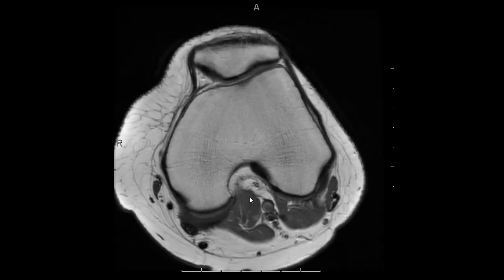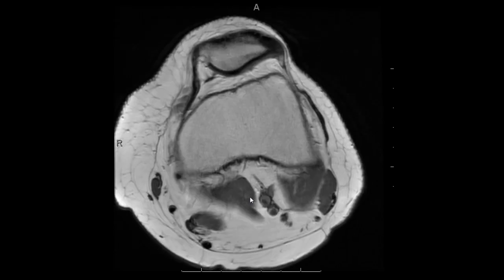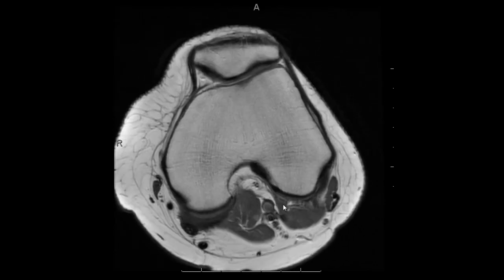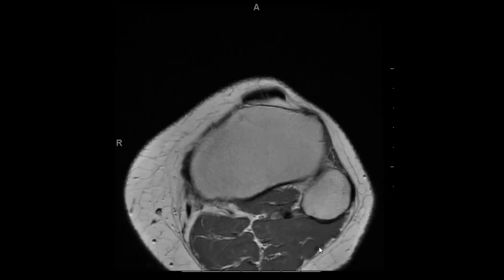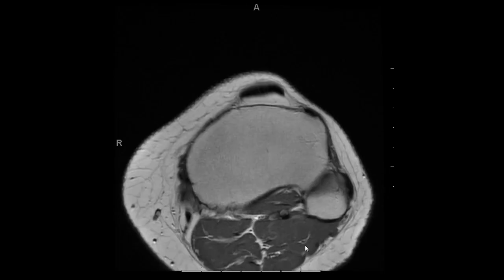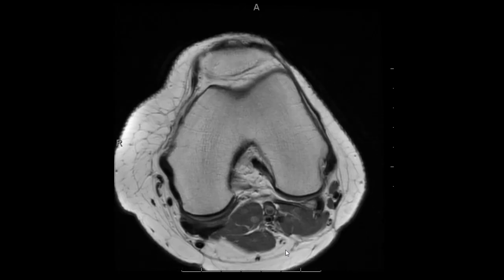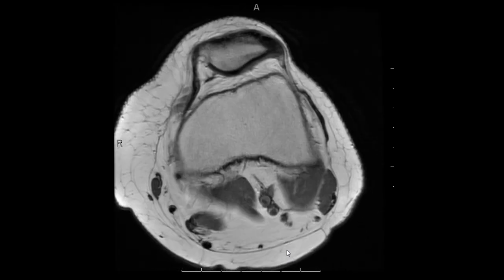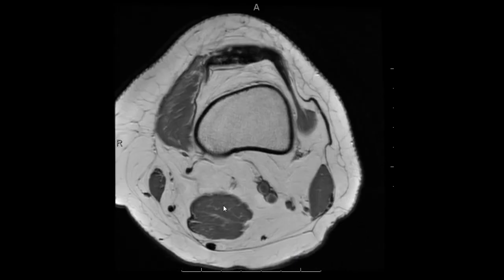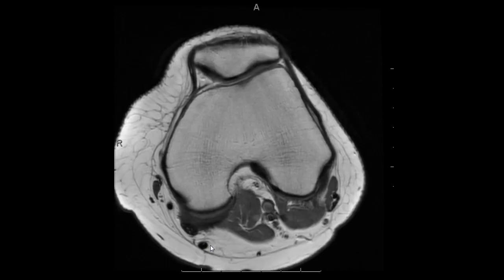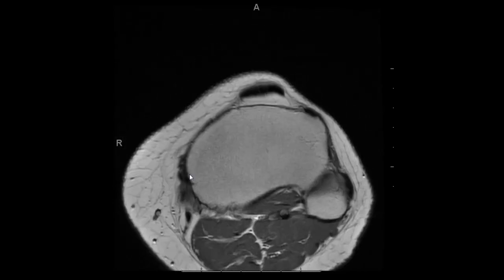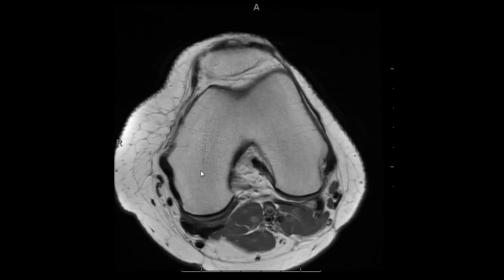The axial plane is a good one to evaluate muscles and neurovascular structures. You can see all the aforementioned muscles here: the medial and lateral gastrocnemius, the popliteus muscle, the biceps femoris, the semimembranosus, the sartorius, the gracilis, and the semitendinosus tendons and muscles extending down to insert on the pes anserine on the medial tibia.